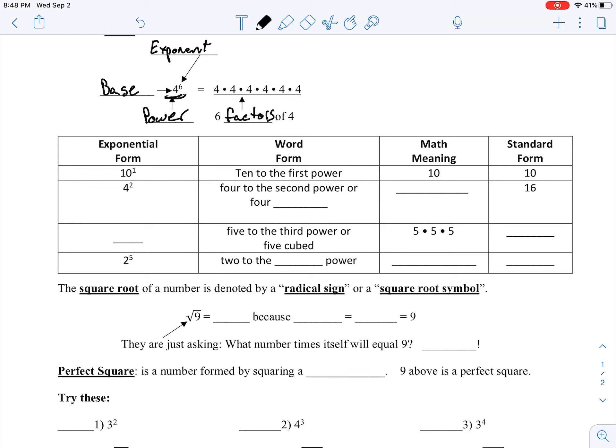So next, 4 squared, or 4 to the second power. So there's two ways we can say this, 4 to the second power, or 4 squared, is just telling us that we are taking our base of 4 and multiplying it together by itself. We are multiplying two things of 4, and when we do that, we get 16.